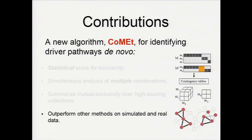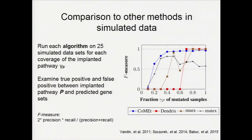We performed our approach on simulated data and real data. In the simulation, we implanted one pathway into the data along with noise, and ran each algorithm on 25 simulated datasets for each coverage level. We examined true positive and false positive rates between the implanted pathway and the predicted gene sets. The blue line — COMET — performs very well in almost all coverage levels. Dendrix and MU-X only perform well at high coverage, while MutEx performs well at low coverage but shows a sharp decrease at high coverage.